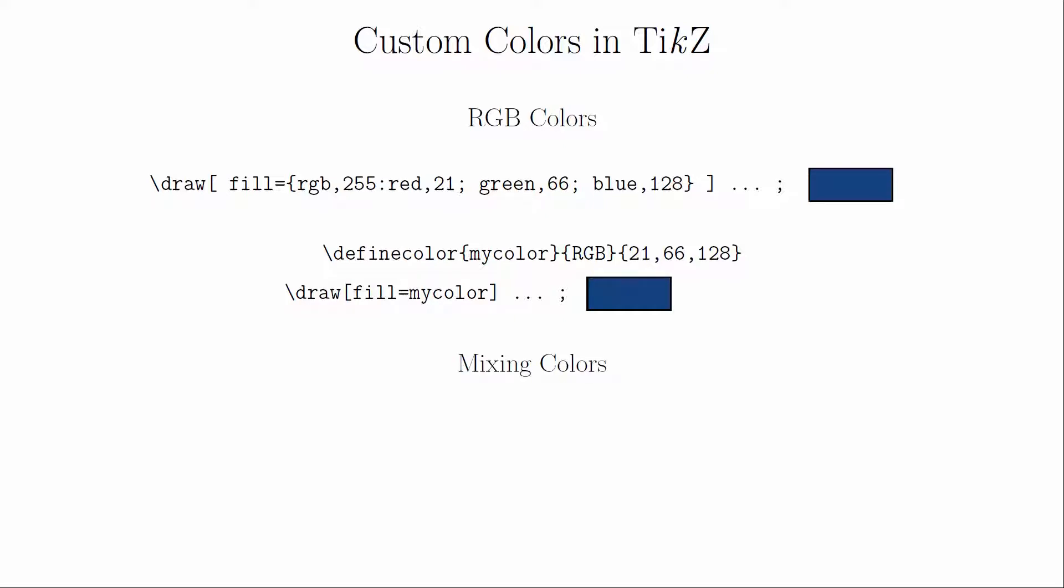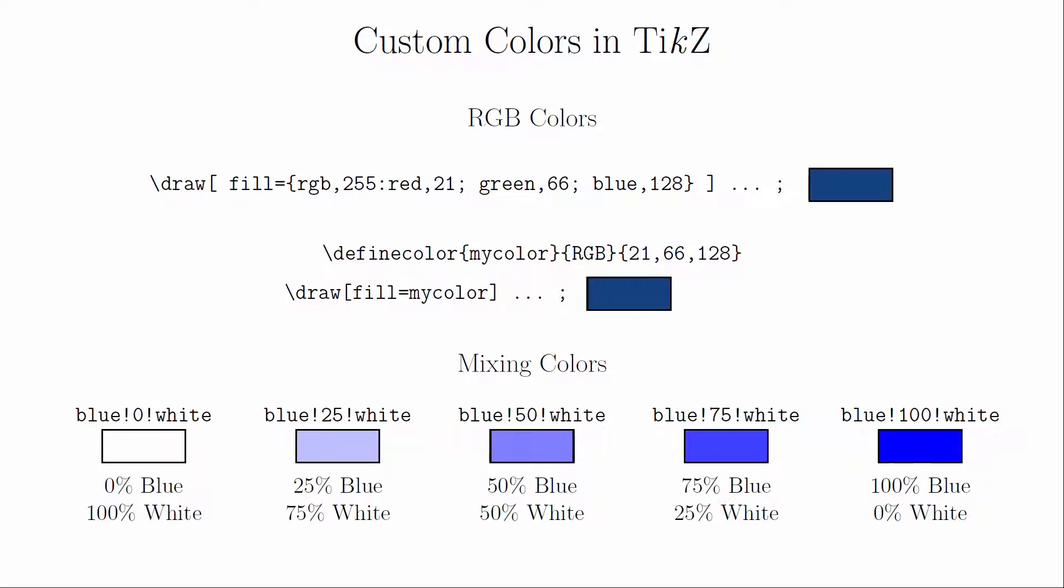You can also describe colors as a mixture of two colors. The notation for color mixing is to have two colors with a number from 0 to 100 between them, and exclamation points as separators. The number represents the percentage of the first color, and the rest of the mixture comes from the second color. I usually do this with a color in either white or black to make lighter or darker versions of the same color.